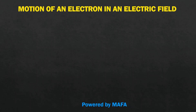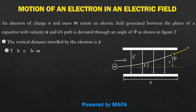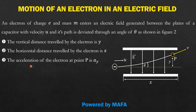Welcome to another video on our YouTube channel. Today we are going to look at the motion of an electron in an electric field. We will define an electron that enters an electric field generated between the plates of a capacitor, deviated by an angle theta as shown in the figure. We will find the vertical distance y, the horizontal distance x — which is just the length of the capacitor — and then the acceleration of the particle at point p.